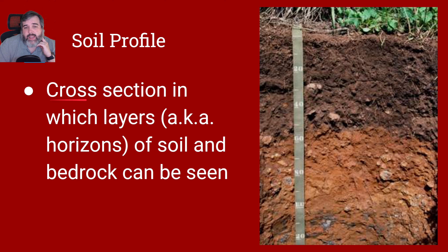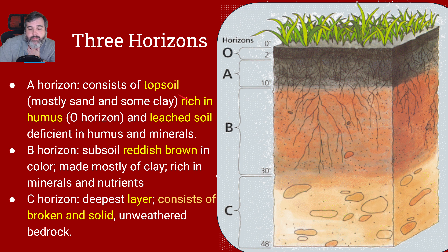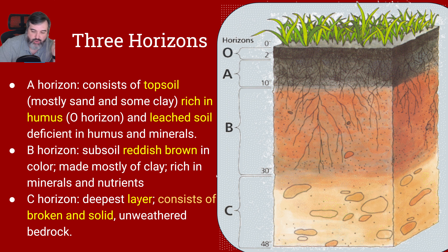The soil profile is a cross section in which layers of soil and bedrock can be seen. On the top we have the O horizon, which is short for organic. Then the A horizon, which is the topsoil — it's rich in humus and leached soil, meaning minerals have been taken from it. The B horizon is a reddish-brown soil. The C horizon is the deepest layer and consists of broken and solid unweathered bedrock.